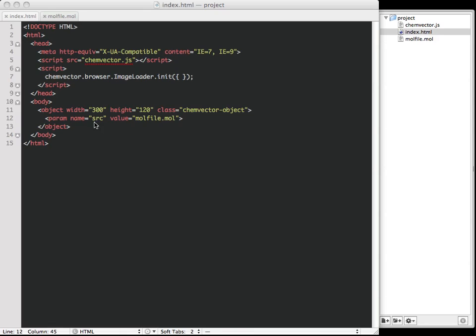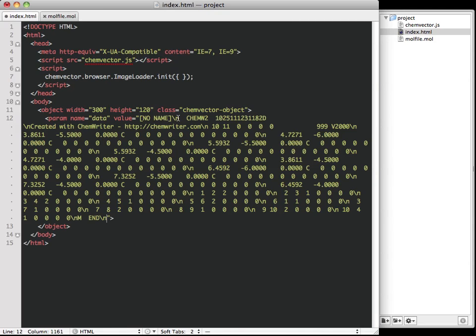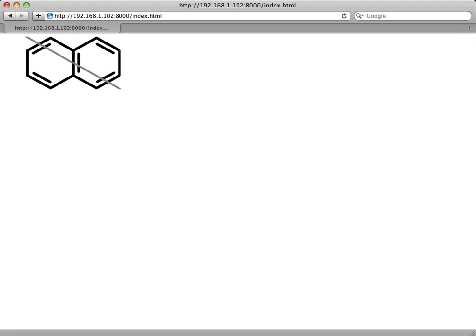Molfiles can be placed inline so that each page containing structures generates a single HTTP request instead of one for each image. To use this feature, just replace the parameter tag referencing a file with one referencing inline content. The result is a page that avoids an extra HTTP request for the structure image.